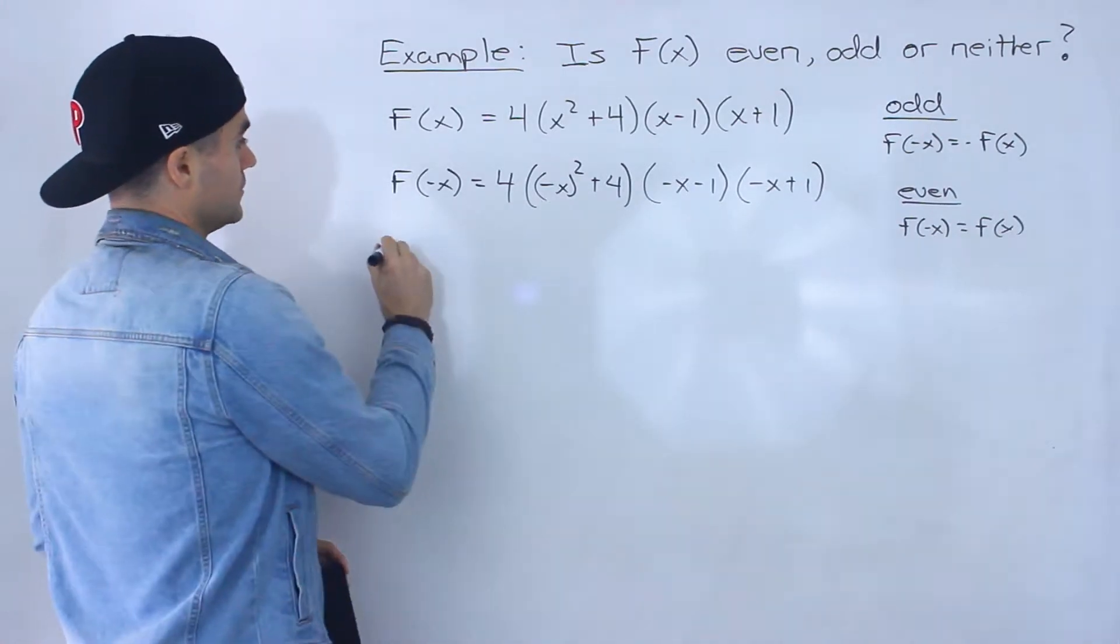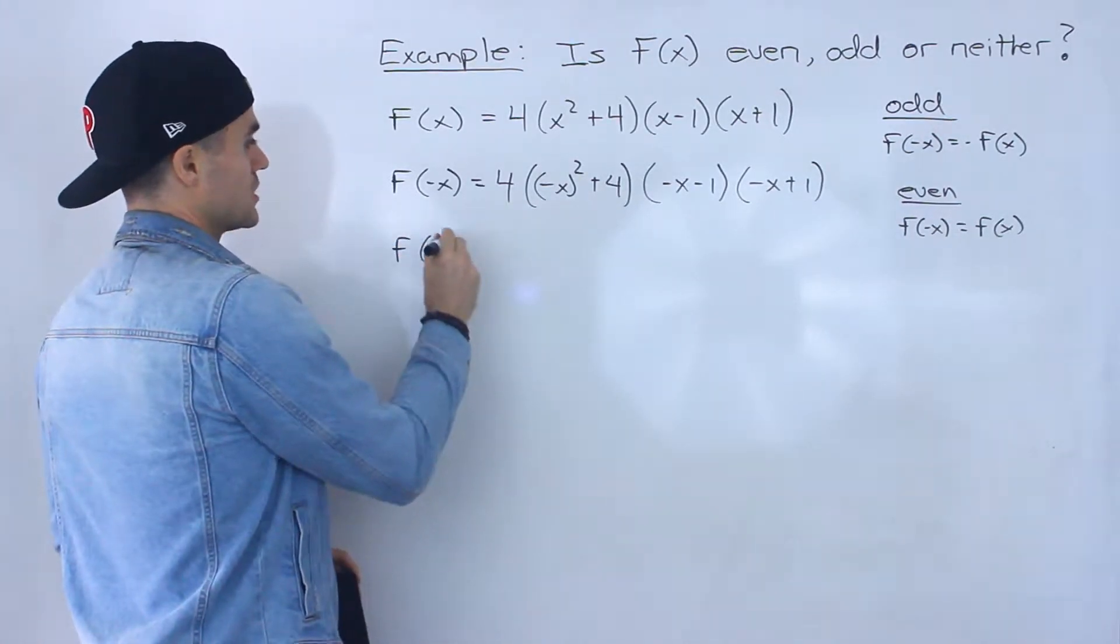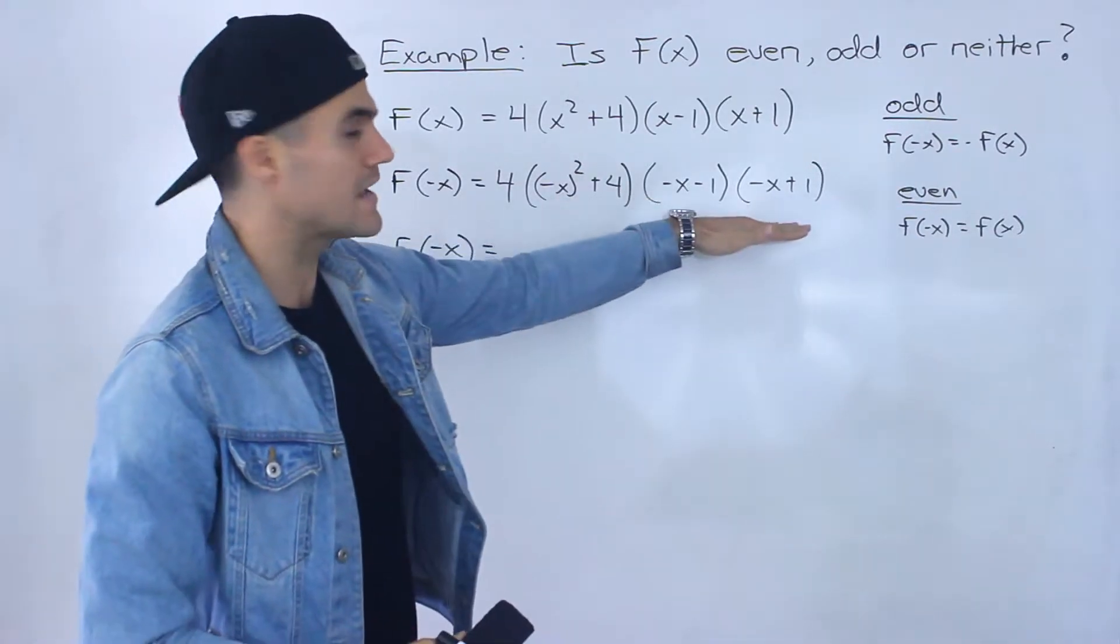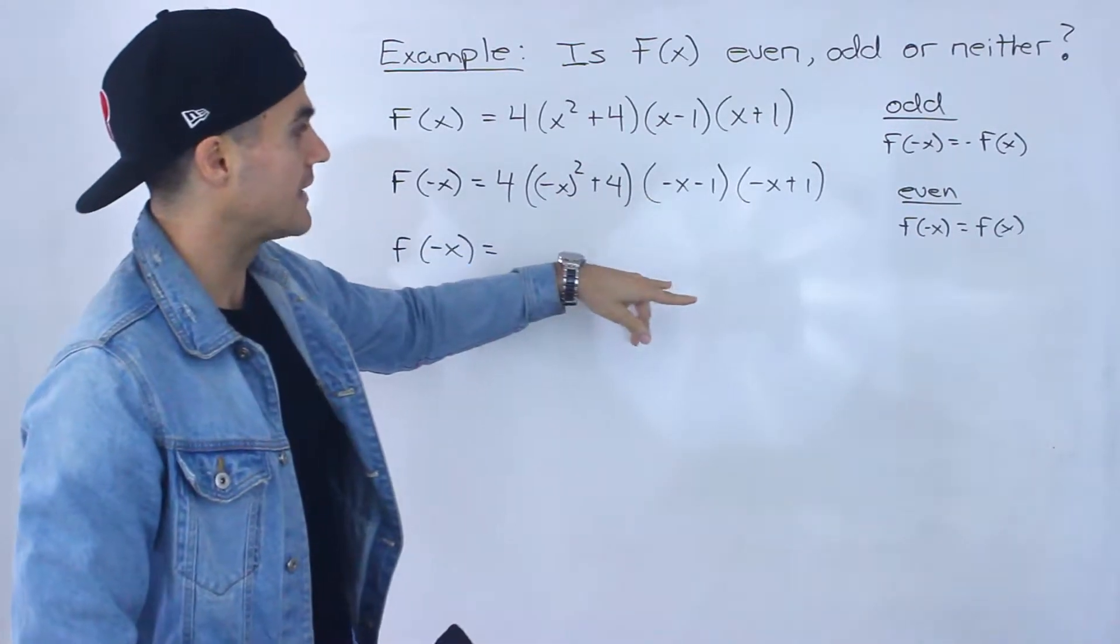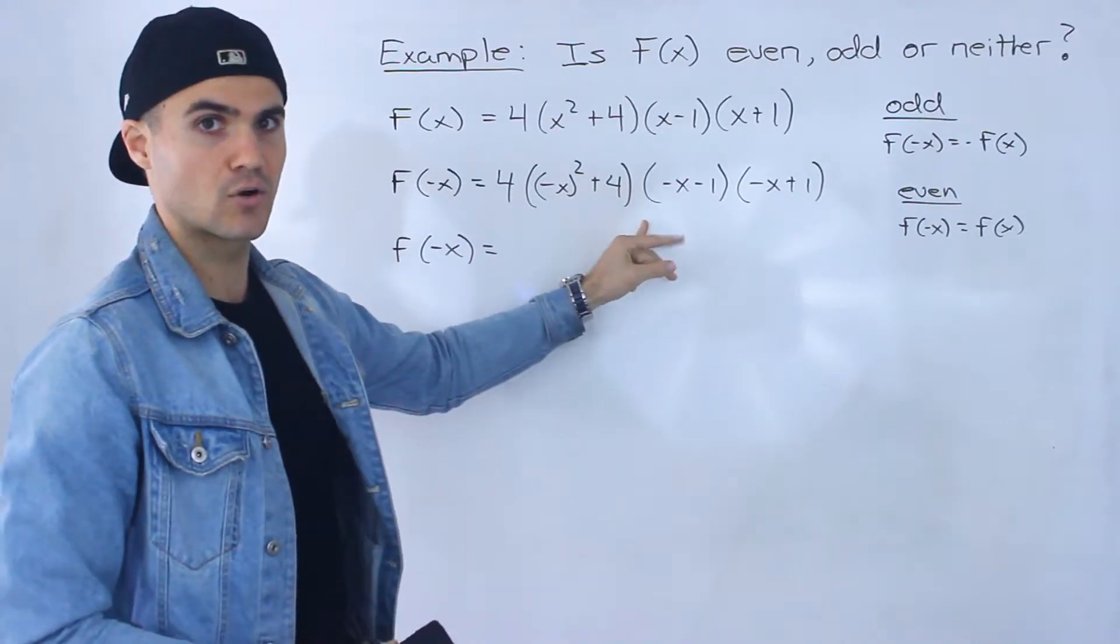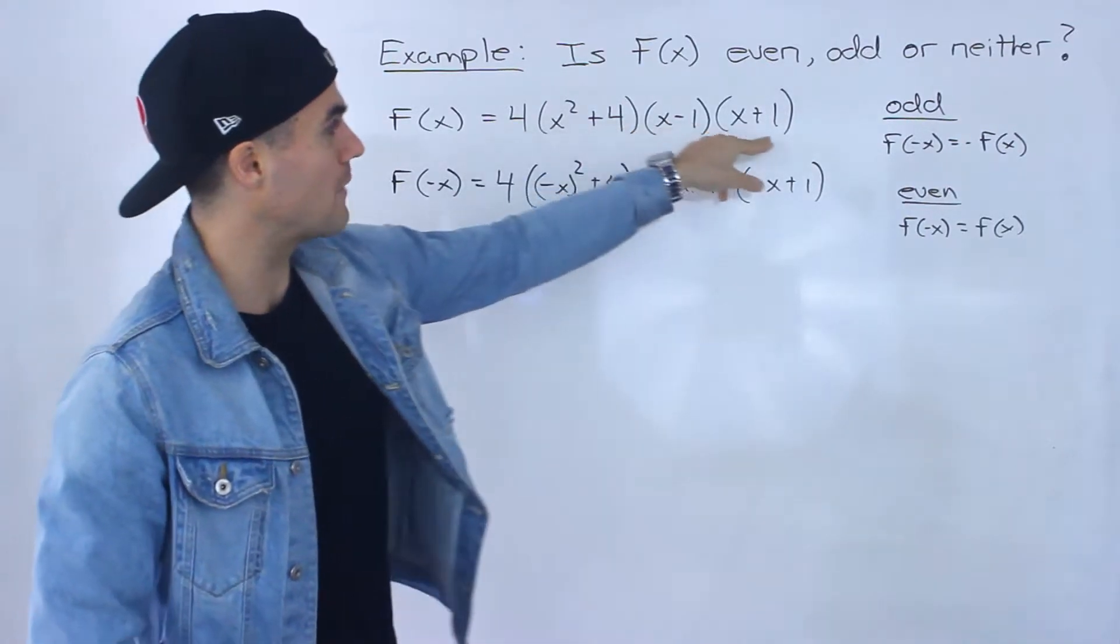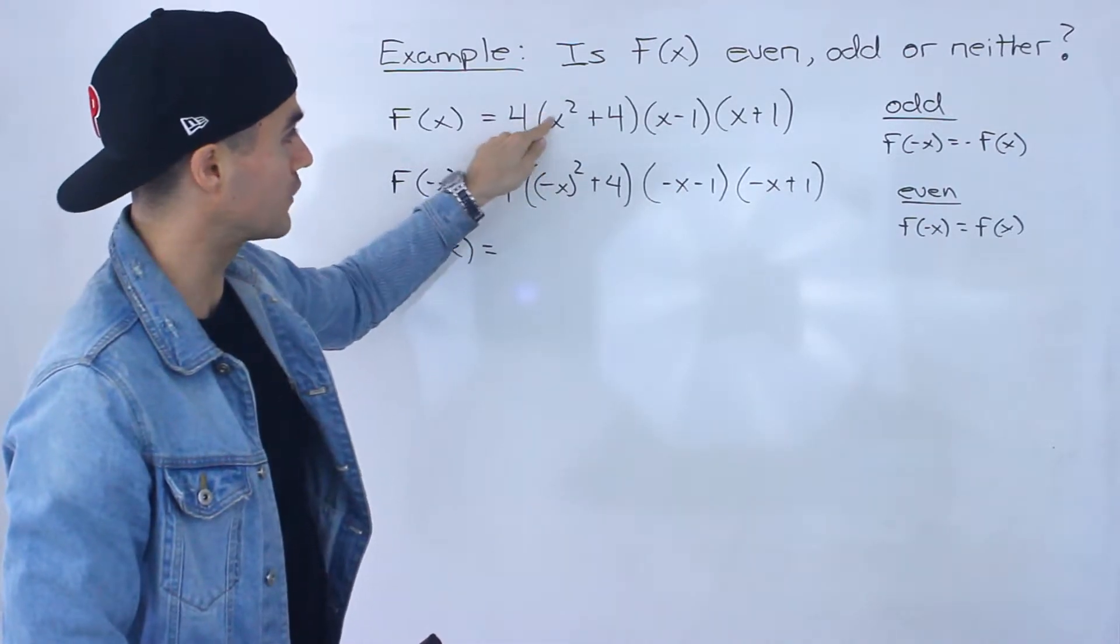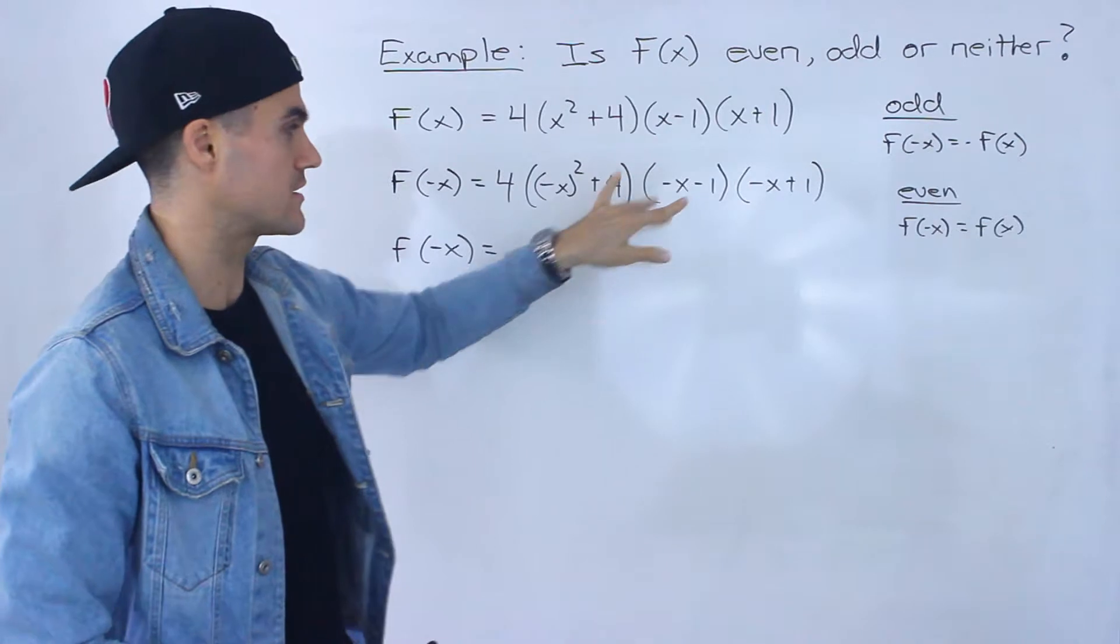Now what we want to do, as I mentioned in the previous video, is we want to take each factor and make sure that it has a positive leading coefficient, so it's in the same format as the function that was given. Notice we have a 1 in front here, a 1 in front there, a 1 in front there. They're all positive.